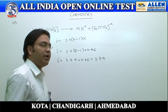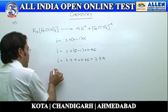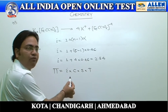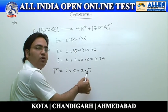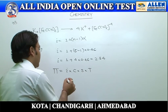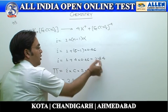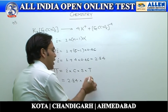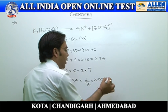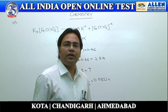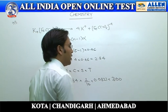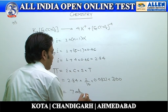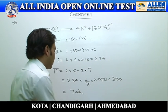Now we calculate osmotic pressure using π = iCST, where i is the van't Hoff factor, C is concentration, S is the solution constant, and T is temperature in Kelvin. With i = 2.84, the given concentration, and temperature 27°C converted to 300 K, after solving the osmotic pressure comes out to 7 atm. Hence the correct answer is option 3.